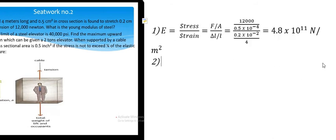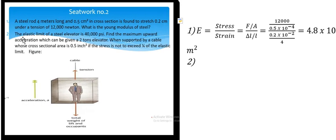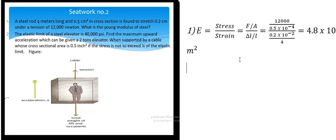Question number two is about an elevator. The elastic limit of the steel elevator cable is 40,000 psi. Find the maximum acceleration which can be given to a two-ton elevator when supported by a cable whose cross-sectional area is 0.5 square inches, if the stress is not to exceed one quarter of the elastic limit. In this one we need to find the tension.